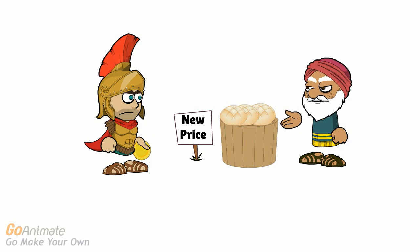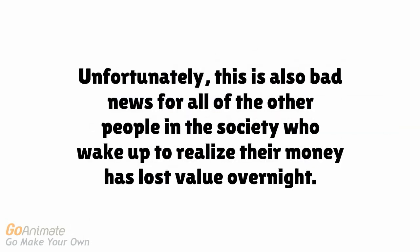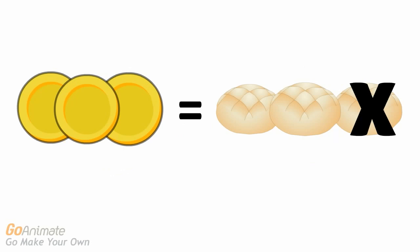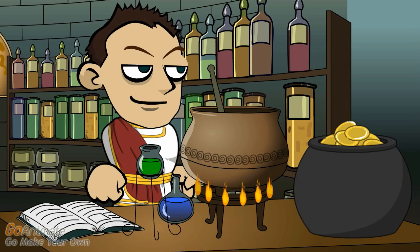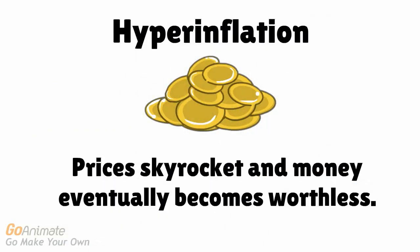The Roman centurions obviously ended up pretty mad at the government. Unfortunately, this is bad news for all the other people in the society who wake up to realize that their money has lost value overnight. Once prices rise, their gold coins now buy fewer goods than they did before. Essentially, by inflating the money supply, the government has secretly taxed the people, devaluing their money so the government will become richer. If the government's inflationary schemes get out of control and they continue creating more and more new debased coins, it will lead to a situation known as hyperinflation, where prices skyrocket and the money eventually becomes worthless.